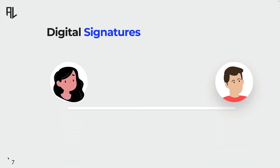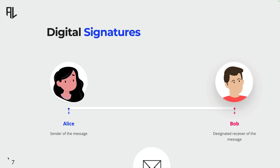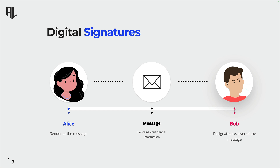Imagine you have a document that you want to send securely to another party. You could simply send it as it is, but how can the recipient be sure that it hasn't been altered along the way? This is where a digital signature comes in. In this example, Alice, as the sender, generates a digital signature for the document she wants to send. This signature is unique to her and the document. The digital signature is created using complex mathematical algorithms, and it produces a unique string of characters that is appended to the document.